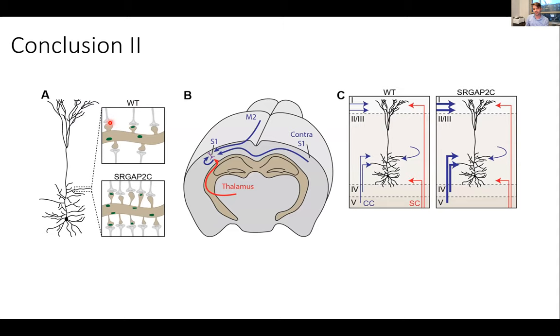So to summarize: we have a gene that changes synaptic development by increasing synaptic density and slowing maturation, and now we see this effect selectively for increased cortico-cortical connectivity.